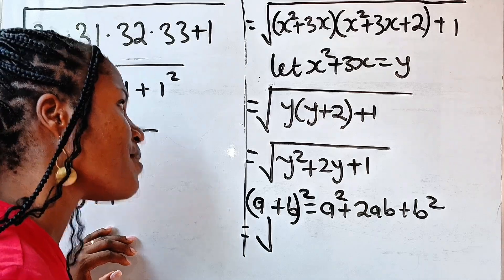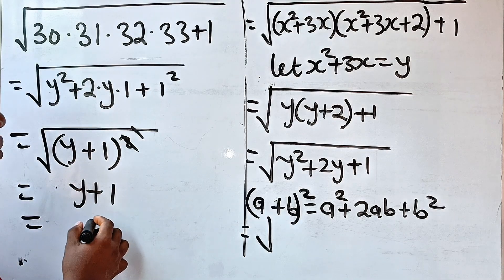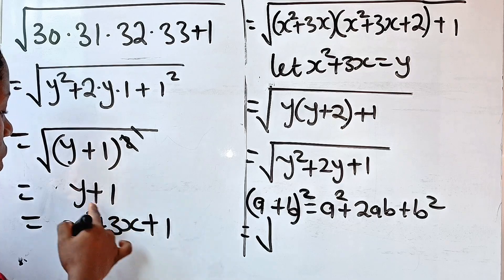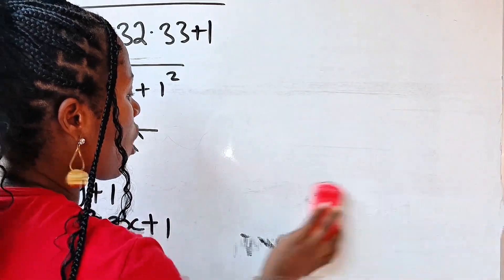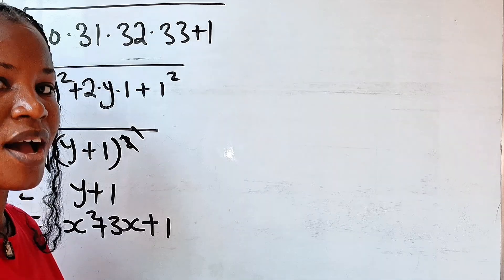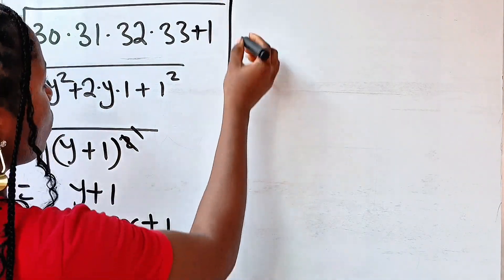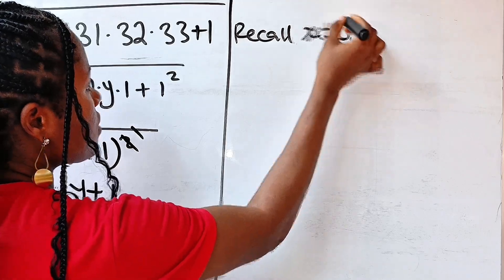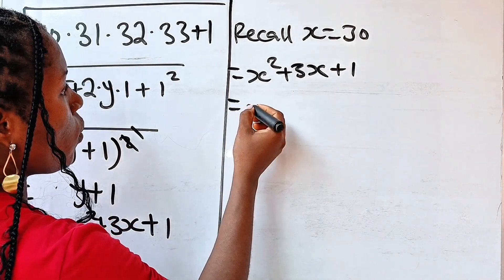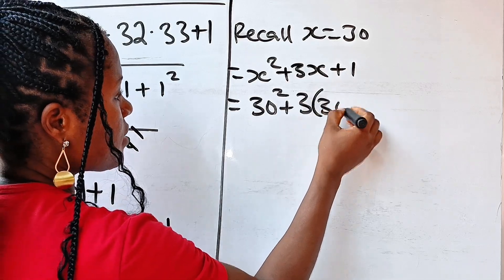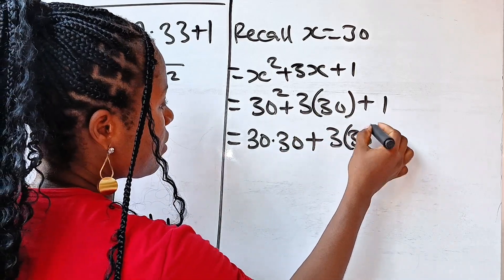But recall, oh, I've cleaned that. Okay, not yet. Recall that our y is x squared plus 3x. Yeah, so we are going to substitute that here. So this is equal to x squared plus 3x plus 1. I'm substituting y as x squared plus 3x plus 1. Now, I want us to recall again. Okay, recall again, where we said let our x be equal to 30. I don't know if you still remember. We expressed this as 30 plus 1, 30 plus 2, 30 plus 3. I decided to call 30x. So recall, recall that x is equal to 30. So that means that x squared plus 3x plus 1 should be equal to 30 squared plus 3 bracket. 30 plus 1. So this is equal to 30 multiplied by 30 plus 3 multiplied by 30 plus 1.